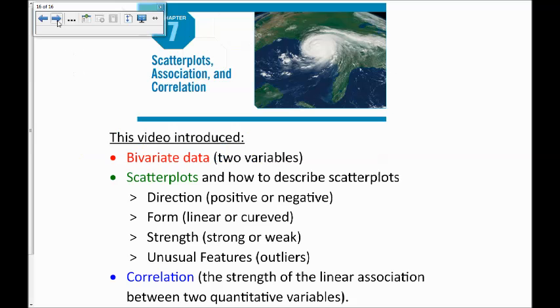So this video is about bivariate data, data with two variables. It was about scatter plots and how to describe scatter plots, talking about the direction, form, strength, and unusual features. And finally, a measure for the strength of the linear association between two quantitative variables called correlation. Thank you for watching.